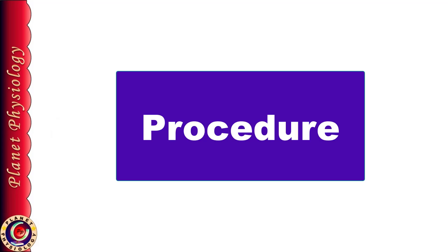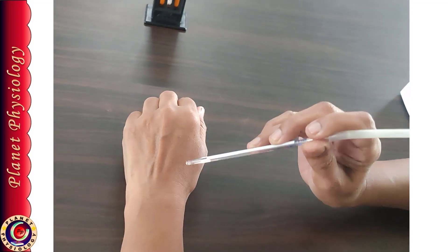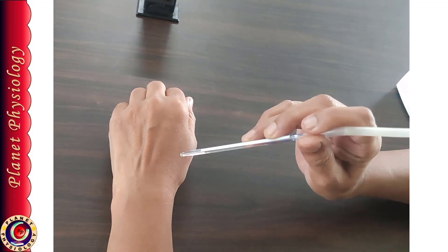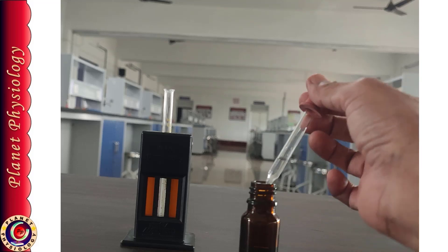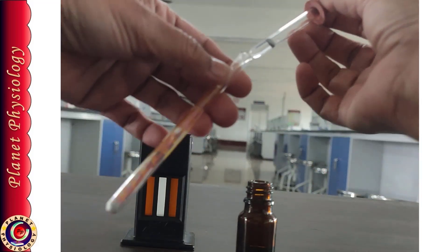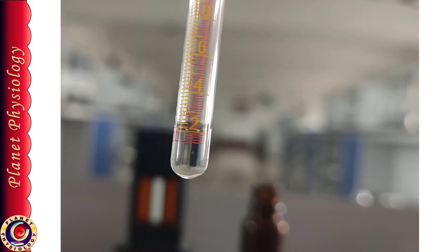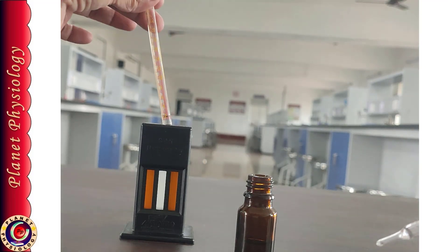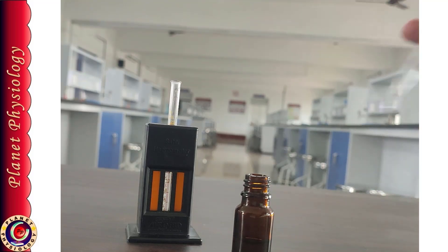Now let's move on to the procedure. First, make sure the apparatus is clean and dry. Also confirm that the pipette is patent — this is easily checked by blowing through the mouthpiece; if you can feel the air current on the back of your hand, the pipette is patent. Take N/10 HCl in the hemoglobin tube up to the lowest mark, i.e. the 2 g% mark, and place the tube in the hemoglobinometer. This is the minimum quantity of acid required to form acid hematin from 20 µL of the blood sample.